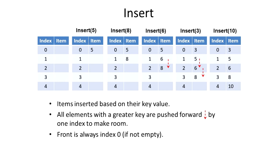This shifting process happens every time we insert a new item into the queue. The front of the queue will always hold the lowest value items, which are removed from there. We're also freeing up space at the front of the queue, so we could modify the algorithm to move items further down towards the front to create space to insert a new value mid-list if needed.